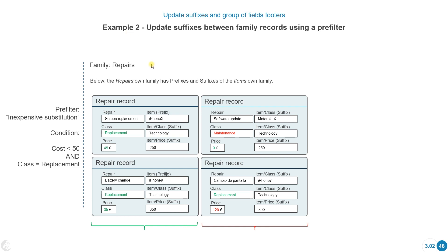Here we'll see another example — exactly the same scenario, but this time instead of selecting a prefix that only lets us update suffixes of one element, we select a pre-filter to update many elements. In this case the family is called repairs and has four elements. The pre-filter condition is that the cost is lower than 50 and the class equals replacement. This pre-filter is called inexpensive substitution. Two elements meet the conditions; two do not — one because the price is over 50, and one because the class is maintenance.